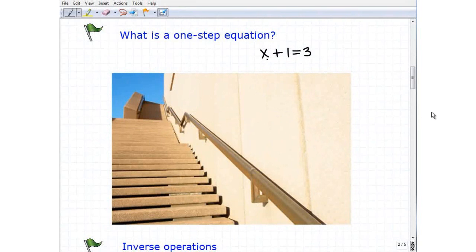So x, remember in algebra as a variable, represents a number. So really, we're talking about some number plus 1 is 3. So what's that number? Well, obviously, that number has to be 2, because 2 plus 1 is 3. So therefore, x must be equal to 2. So we just solved this one-step equation.